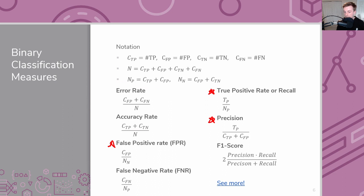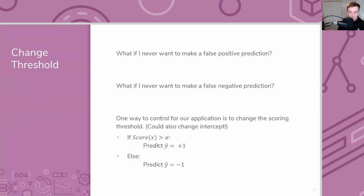These rates are always computed relative to the true labels. The false positive rate is the number of false positives divided by the total number of actually negative examples — of all examples labeled negative, what fraction did you falsely label as positive? The true positive rate is the opposite: of all examples that are actually positive, what ratio did you correctly predict as positive? With a threshold classifier, you can control both rates by changing the threshold.